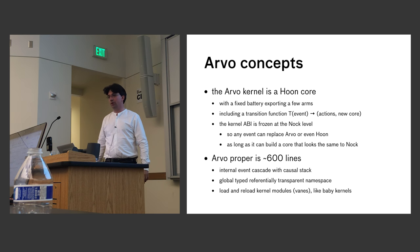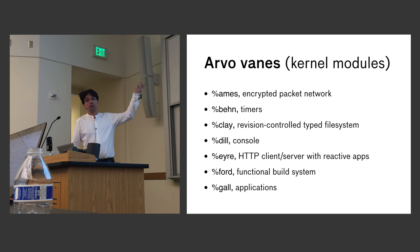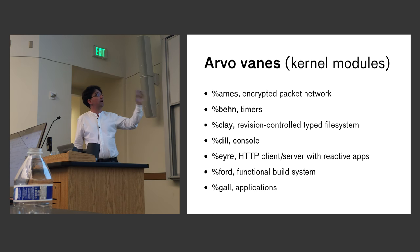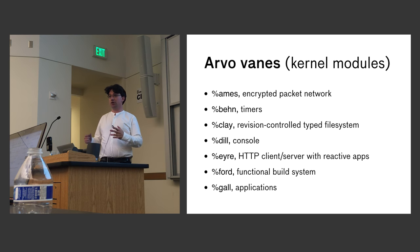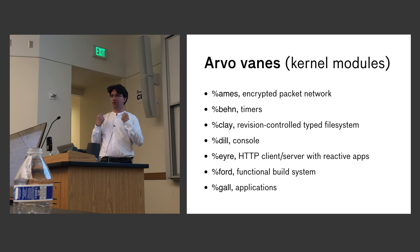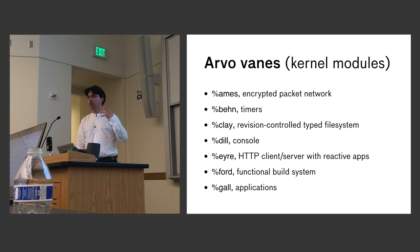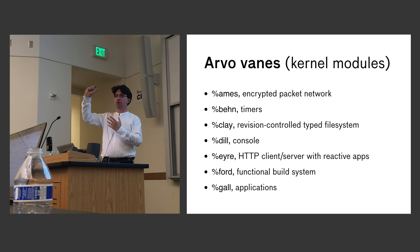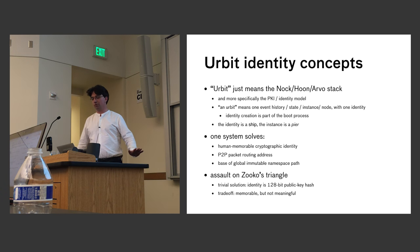Arvo is a very simple system — only a few hundred lines of code, probably less than 600. It does an internal event cascade. Event systems that are very complicated quickly turn into spaghetti event logic; there's a duality between events and procedure calls where the dual of a simple event system is a goto. Arvo has the equivalent of subroutines in an event model and a global referentially transparent namespace. Most of the work is done by vanes, which are kernel modules with the same core-like structure as Arvo itself, loaded from source.